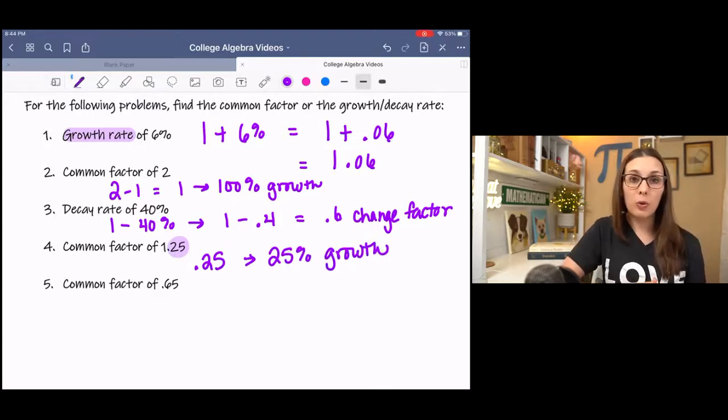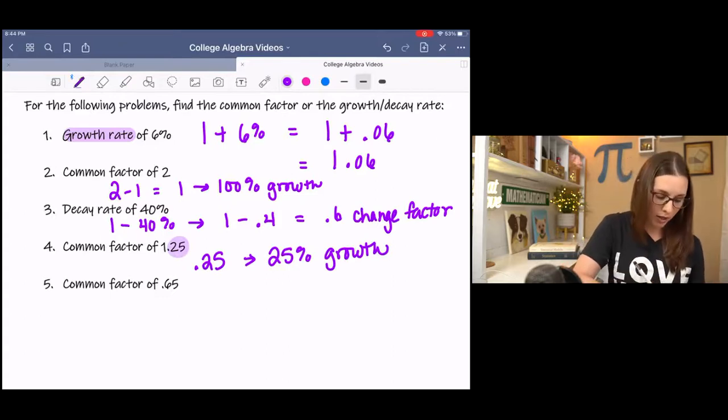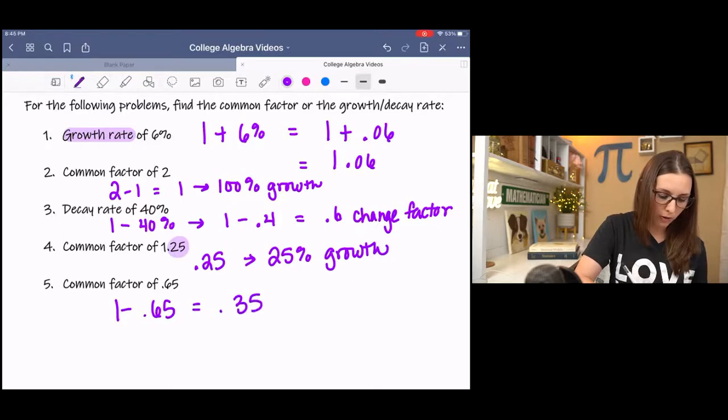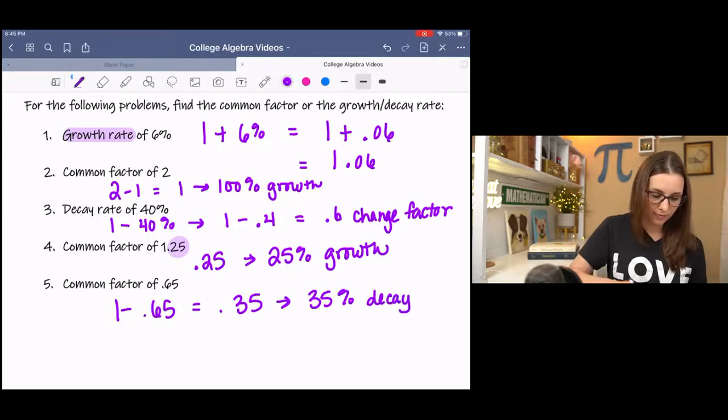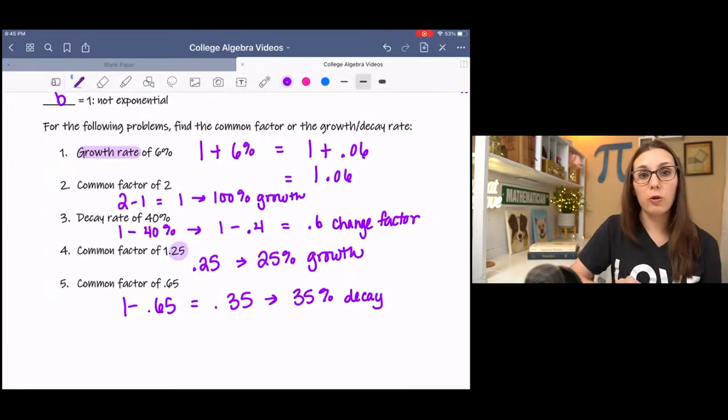The next example is below 1. So how far below 1 is it? It's 0.35, which is 35% decay. And that's how you go back and forth between percentage and change factor.